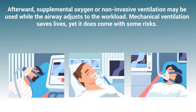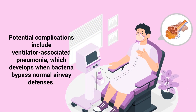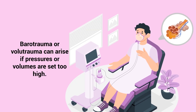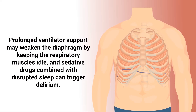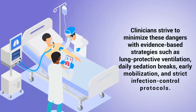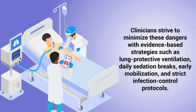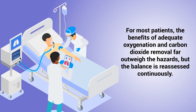Mechanical ventilation saves lives, yet it does come with some risks. Potential complications include ventilator-associated pneumonia, which develops when bacteria bypass normal airway defenses. Barotrauma or volutrauma can arise if pressures or volumes are set too high. Prolonged ventilator support may weaken the diaphragm by keeping the respiratory muscles idle, and sedative drugs combined with disrupted sleep can trigger delirium. Clinicians strive to minimize these dangers with evidence-based strategies such as lung-protective ventilation, daily sedation breaks, early mobilization, and strict infection control protocols. For most patients, the benefits of adequate oxygenation and carbon dioxide removal far outweigh the hazards, but the balance is reassessed continuously.